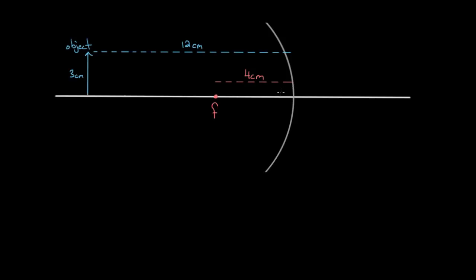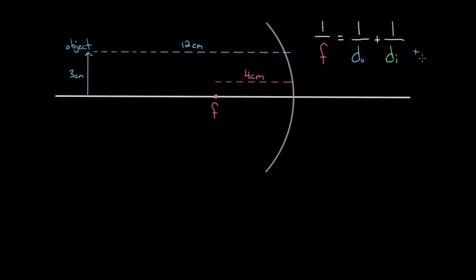Mirror equation problems can be intimidating when you first deal with them, but that's not because the mirror equation is all that difficult — it's kinda easy, just a few fractions added together. The place where it gets tricky is deciding whether values should be positive or negative. There are a bunch of sign decisions you have to make, and if you make even one incorrectly, you can get the wrong answer. So let's do a few mirror equation problems and see how the signs work.